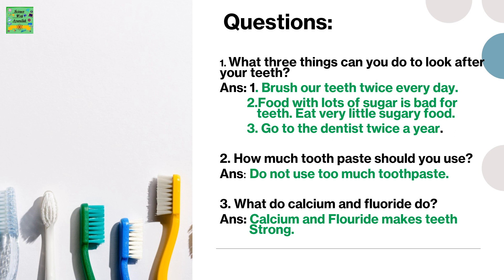What are three things you can do to look after your teeth? Brush your teeth twice every day. Food with lots of sugar is bad for teeth — eat very little sugary food. Go to the dentist twice a year. How much toothpaste should you use? Do not use too much toothpaste. What do calcium and fluoride do? Calcium and fluoride make teeth strong.